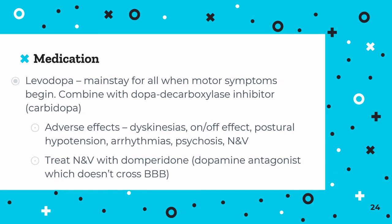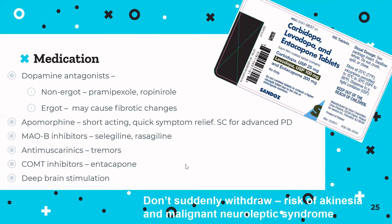Adverse effects of levodopa include dyskinesias, the on-off effect where patients alternate between being functional and completely switched off, postural hypotension, arrhythmias, psychosis, and nausea and vomiting. Nausea can be treated with domperidone — an antiemetic that, although a dopamine antagonist, doesn't cross the blood-brain barrier and so won't worsen the Parkinson's picture.